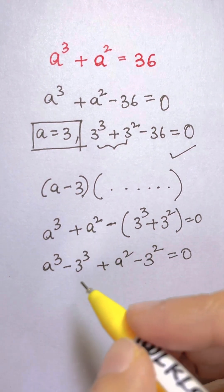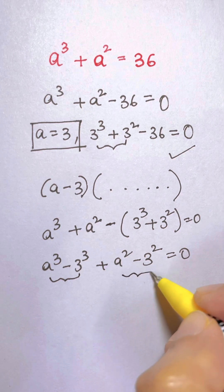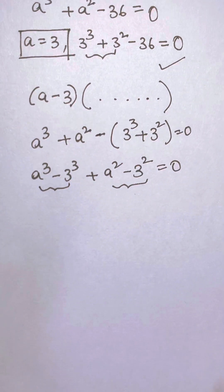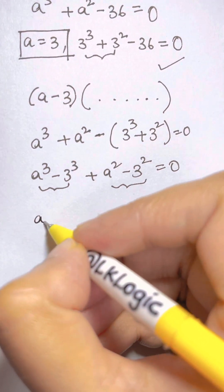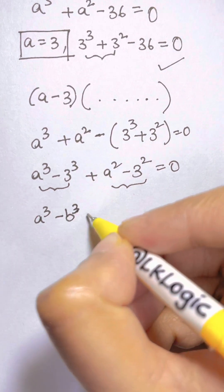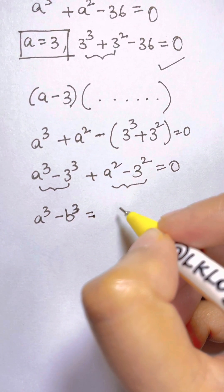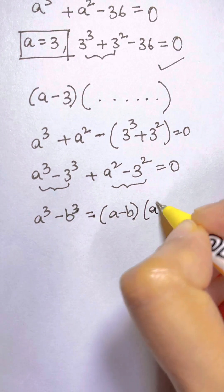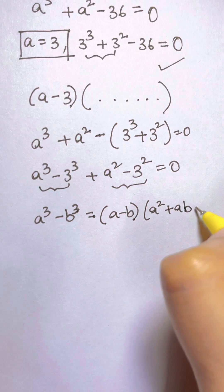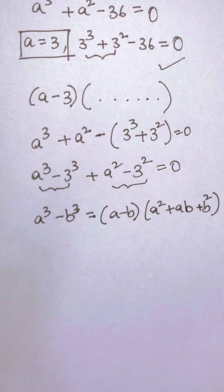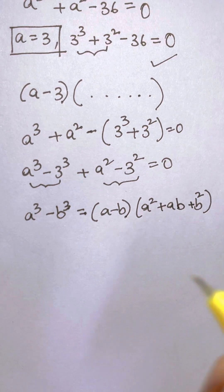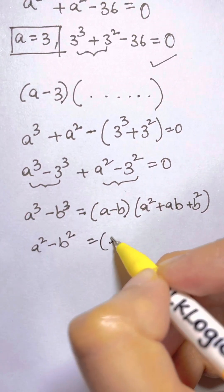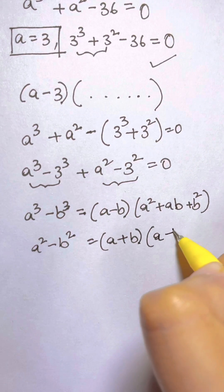So a³ + a³ + a² - a² = 0. The next thing, what I can see is there is an identity. Both of them are identities. So which identity we are going to use? First is, you should know what is a³ - b³. It is (a - b)(a² + ab + b²). Now what is a² - b²? a² - b² is (a + b)(a - b).